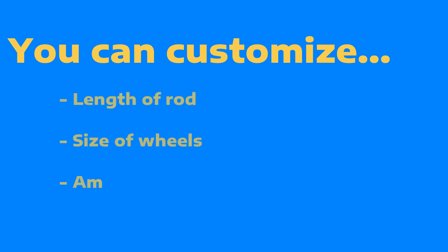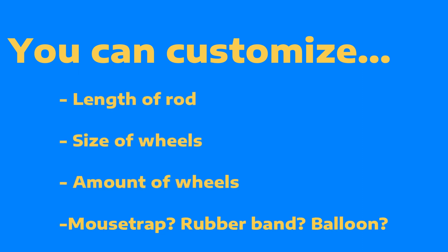Before we let you go, some things you can customize on your car to make it your own are the length of the rod, the size and amount of wheels, and how you want to power it. Speaking of how you want it powered, if you'd rather tackle the balloon powered or the rubber band powered, stay tuned for a quick walkthrough of how we build those.